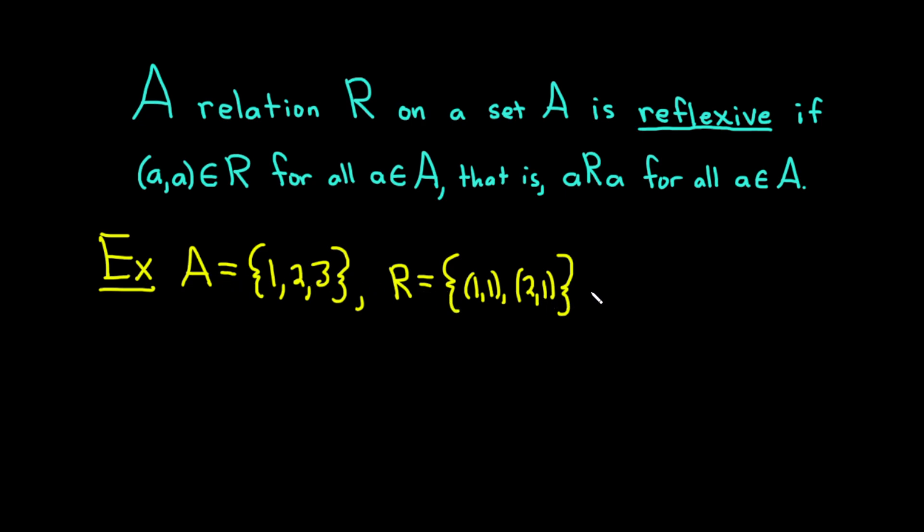So this is a relation on A because it's a subset of A cross A. And we're going to see if it's reflexive. So it's reflexive if for all a in A, we have a related to a. So in this case, 1 is in A, and (1,1) is in R. So 1 is related to 1. But notice, for example, 2 is in A.